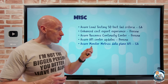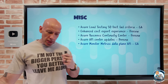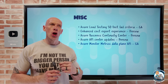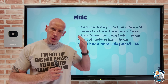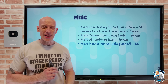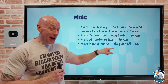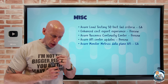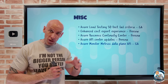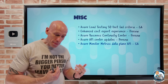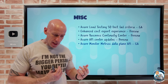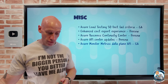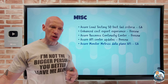Azure Monitor Metrics Data Plane API has gone GA. Previously, fetching metrics from Azure Monitor would go through ARM, hitting certain limits and performance implications. With the Data Plane API, it's a far more efficient option - I can retrieve metric data for up to 50 resource IDs in a single call within the same subscription and region, giving a greatly improved query and performance experience.